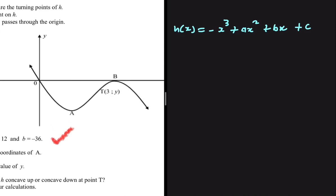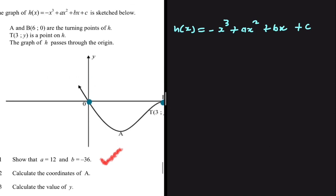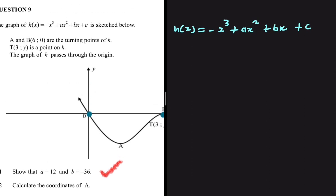Looking at our graph, we're given two x-intercepts: one at x equals zero and another at x equals six. We're told the coordinates of B are x equals six and y equals zero. So our cubic function has two roots, one of which is x equals zero.